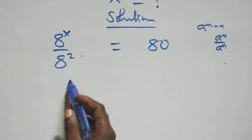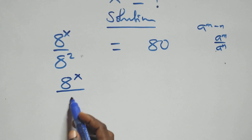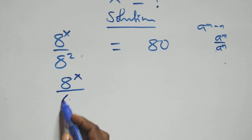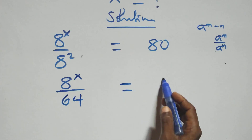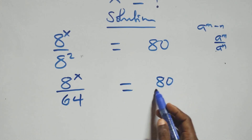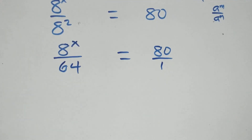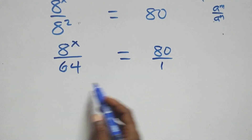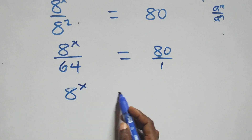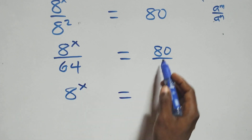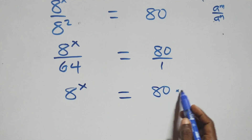This is the same thing as a raised to power x over a squared equals 80 over 1. The next step here, we cross multiply: a raised to power x times 1, which is the same thing as a raised to power x, equals 80 times 64.